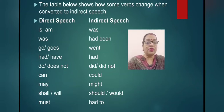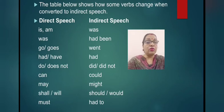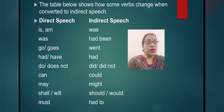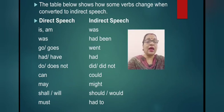There are three slides you have to remember. In direct speech: is/am changes to was; was changes to had been; go/goes changes to went; have/had changes to had; do becomes did; does not, did not; can becomes could; may becomes might; shall becomes should; will becomes would; and must becomes had to.